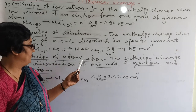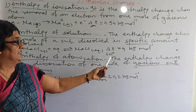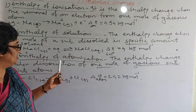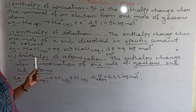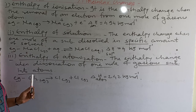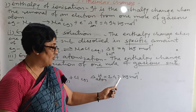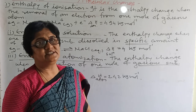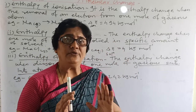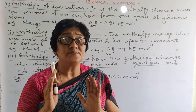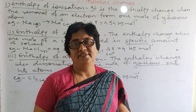Then, enthalpy of atomization: atomization means atom formation takes place. The enthalpy change when one mole of a gaseous substance is dissociated into atoms is called the enthalpy of atomization. For example, Cl2 gas converted into Cl atoms, delta H = 242 kJ/mol. These are the simple definitions — if you know only the name and the meaning of the term, you can write the definition very easily. Thank you.